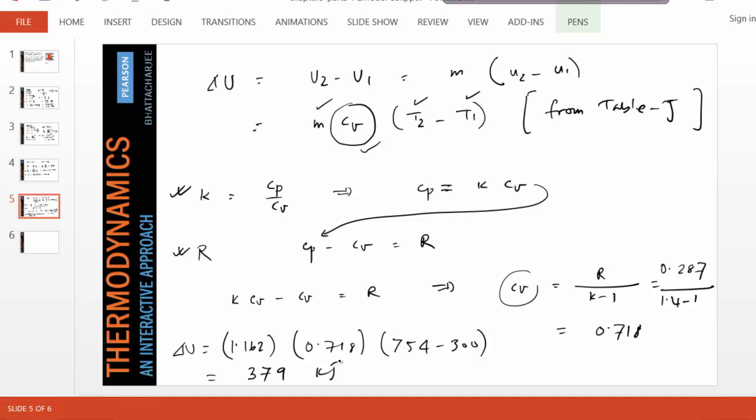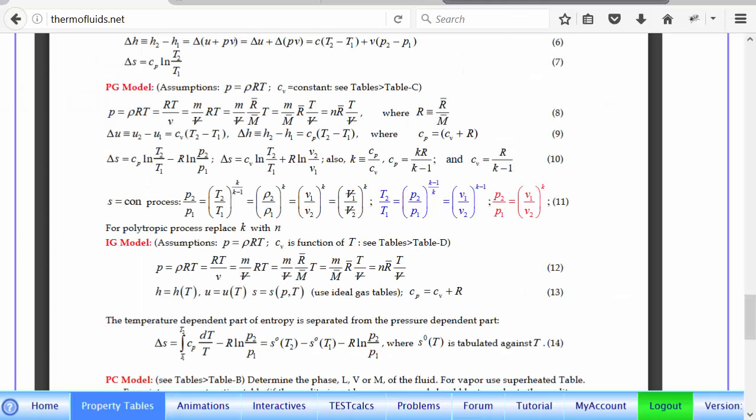So we got all the manual answers, but you should never be satisfied unless you find a way to verify. One way is to go back and recheck every calculation. We'll follow a similar approach, because test calcs are available, we'll use them. But before that look, in the table the formulas I used should be in here. I used the formula delta U to be Cv times delta T. I used this formula.